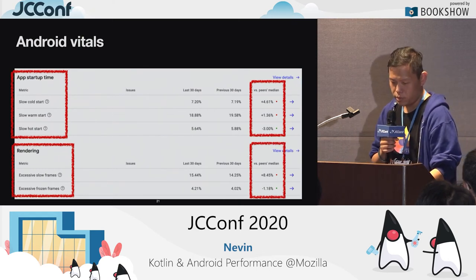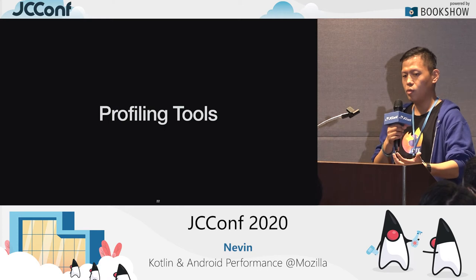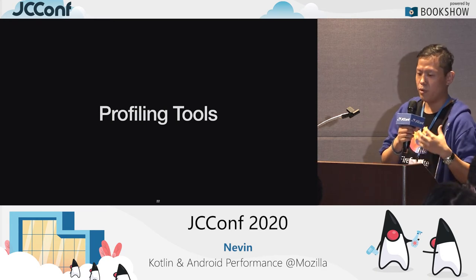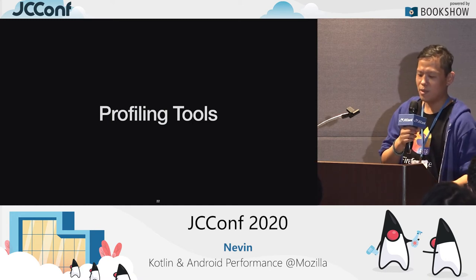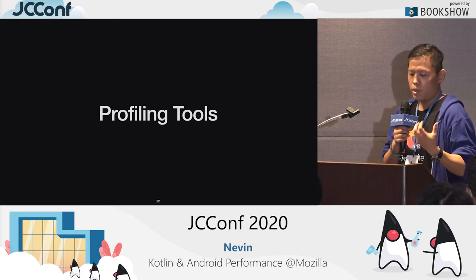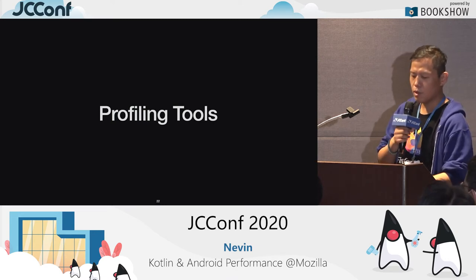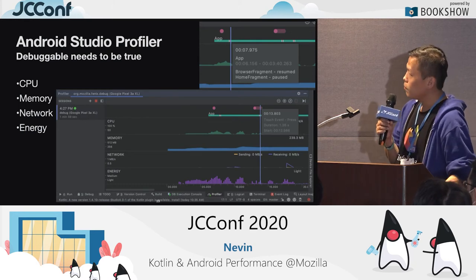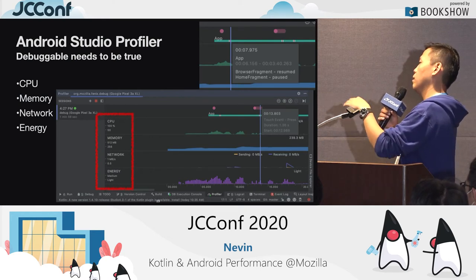Profiling tools are what I call in-the-lab testing. Sometimes you need a stable environment. There's an interesting issue the Google team found: thermal throttling — when your phone gets hot, it slows down the CPU to protect hardware. So if you use a real device it can be unstable. Android Studio Profiler requires debugger to be set to true, but you can get CPU, memory, and network usage, and drill down to where the most costly calls happen.